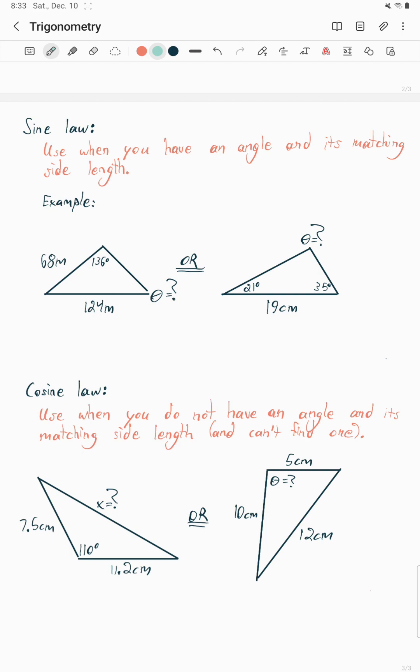Use sine law when you have an angle and its matching side length. So this first example, we have 136 degrees and 124 meters, use sine law there. This next example,